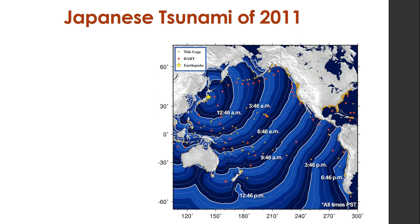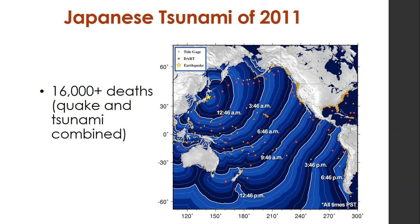The Japanese tsunami of 2011, which you'll watch a video about, resulted in 16,000 deaths from the quake and tsunami combined. The quake happened close to shore, and the tsunami — at a much smaller scale — reached the west coast of South America but didn't cause damage there. Japan is very well equipped to deal with tsunamis: they have a tsunami alarm system and people know to get to higher ground, but there were still 16,000 deaths due to the magnitude of that tsunami.